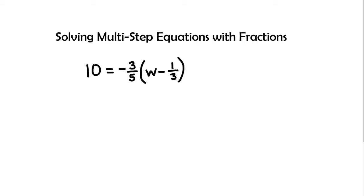When we see a number before the parentheses, it means to distribute. So I need to distribute this negative three-fifths to the variable w and also to the negative one-third.